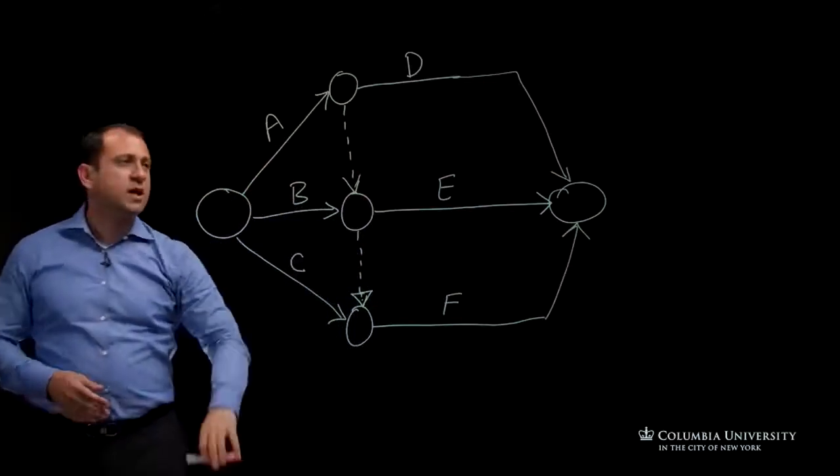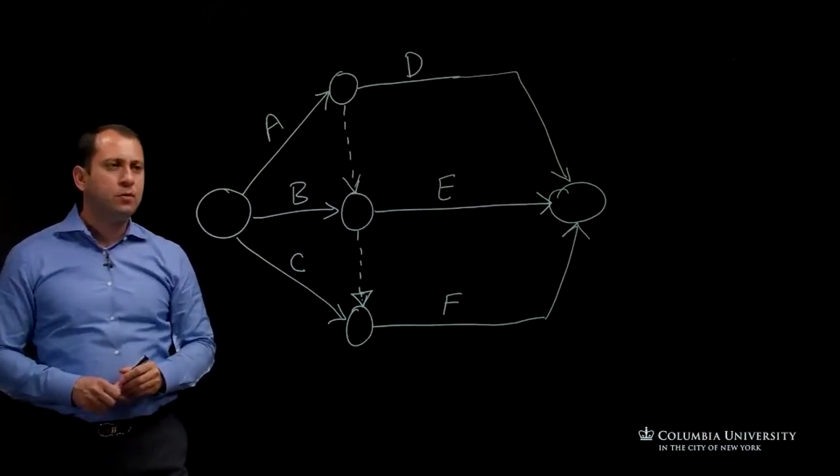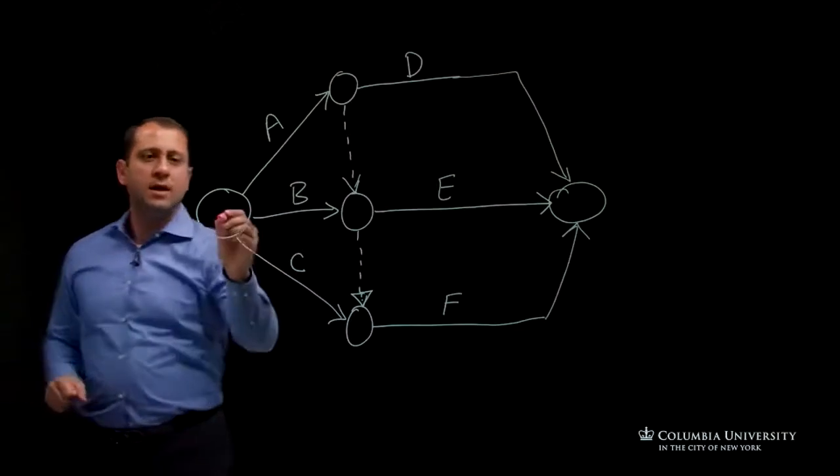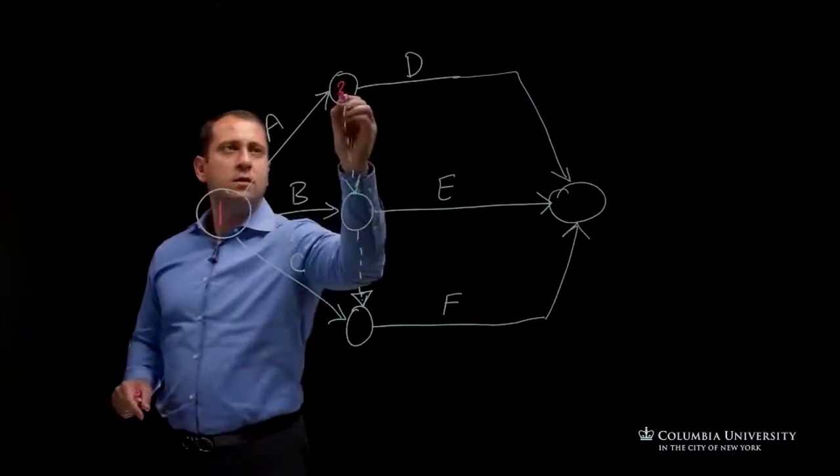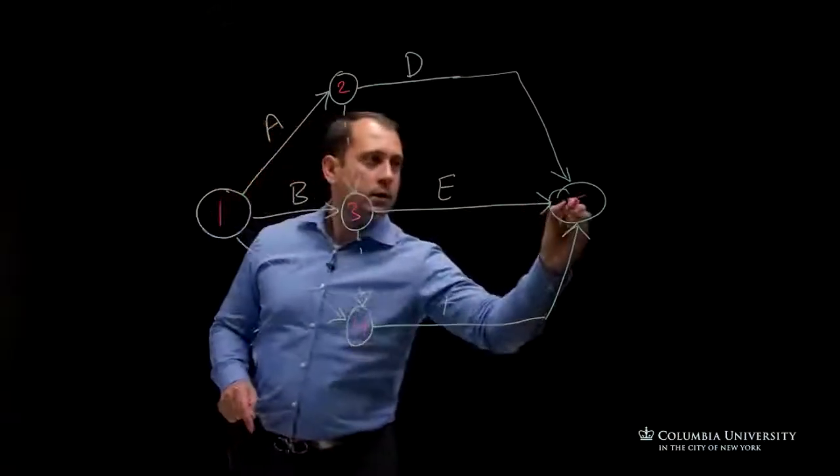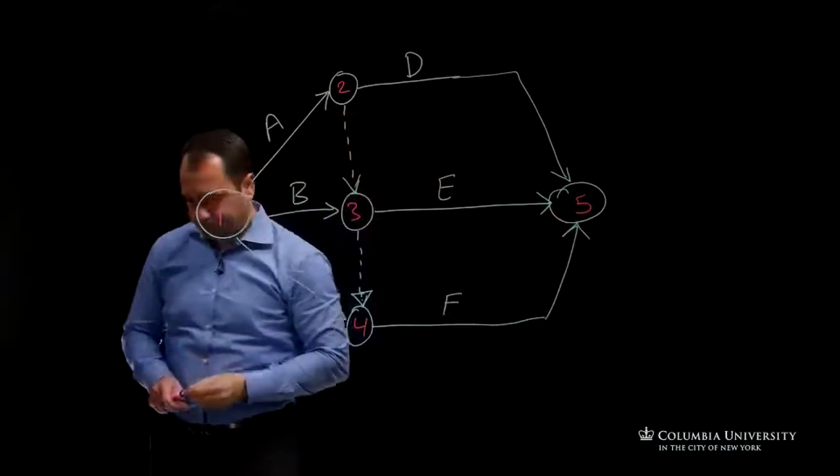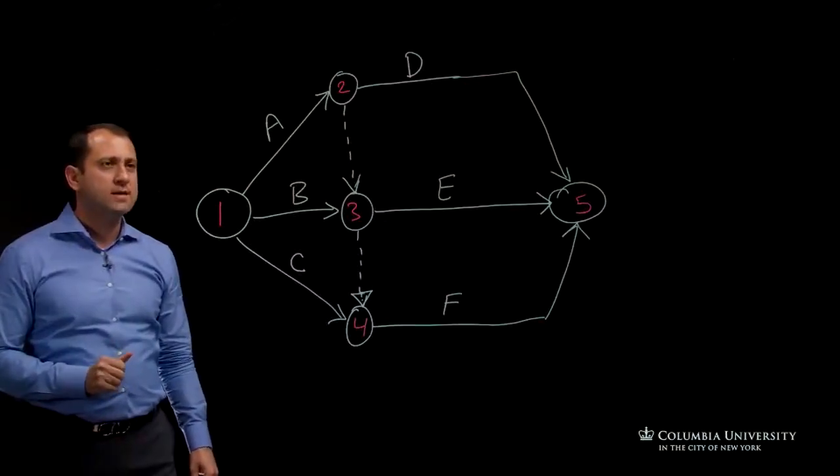Then the next step would be numbering the nodes. As I mentioned, I like to go vertically, so we have one, two, three, four, and five. So that would be numbering the nodes. That would be the solution for our example.